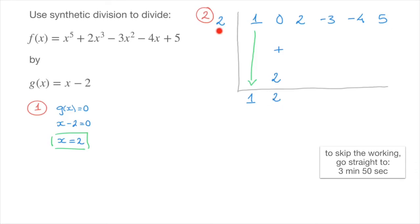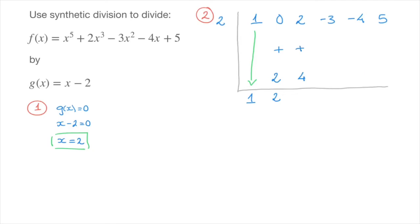We multiply 2 by 2 on the left-hand side: 2 times 2 is 4, written at the bottom of the next column. Adding 4 to the coefficient above gives 2 plus 4 equals 6. Then 6 times 2 equals 12, and 12 plus negative 3 equals 9. Next, 9 times 2 equals 18, and negative 4 plus 18 equals 14. Finally, 14 times 2 equals 28, and 5 plus 28 equals 33.